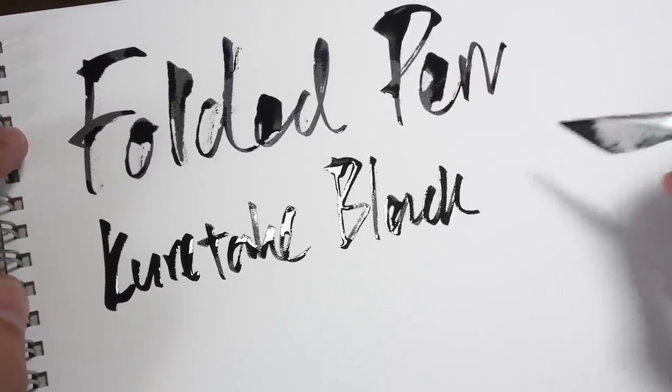I should probably show you if it's possible to create calligraphy with this pen. I'm not very good at that, but I'm going to show you some letters that I write. So this is the folded pen. And the ink I'm using is the Kuretake Black Ink 60. Let's see if you can use the broad strokes to create some letters. I have to dip it for every letter.